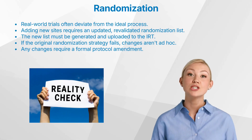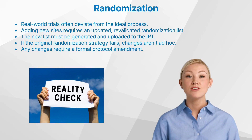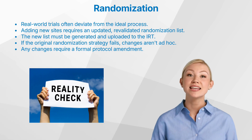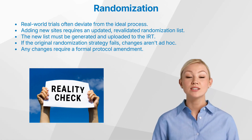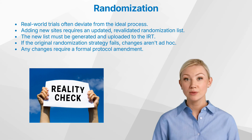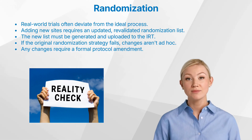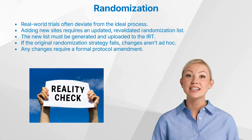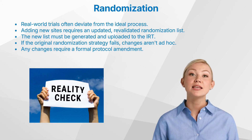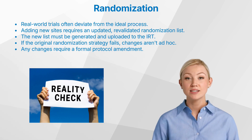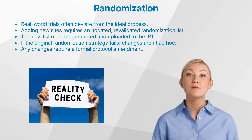Let us now consider special situations that can arise during a study. Real studies aren't always a clean, linear process. One common scenario is when new study sites are added after the initial setup. If those sites weren't included in the original randomization list, an updated list must be generated — going back to the program, validating it again, generating a new list, and uploading it into the IRT. Another case is when the randomization strategy defined in the protocol turns out to be impractical. In such cases, we can't just change the randomization plan — we need to amend the protocol itself.